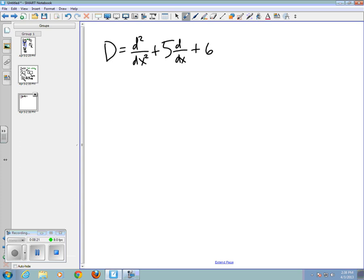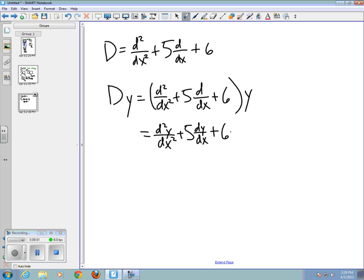Now, what does that mean? Well, if that's an operator, it's supposed to work on a function. So, I need to tell how it works on a function. And so, I'm going to apply all this stuff up here to y. So, that would be d²/dx² + 5d/dx + 6 applied to y. And what I mean by that is actually apply the two derivatives and multiply by 6. So, this would be d²y/dx² + 5dy/dx + 6y. So, that's what Dy would amount to.